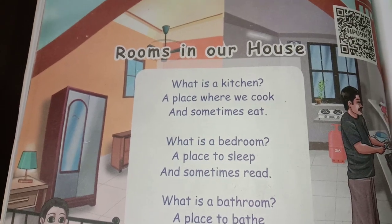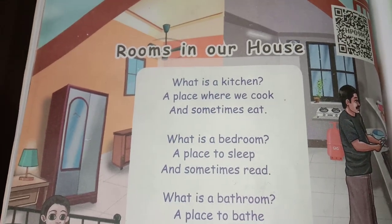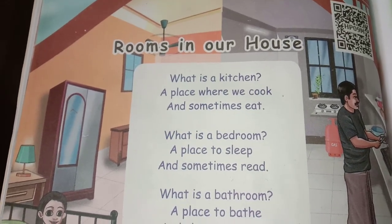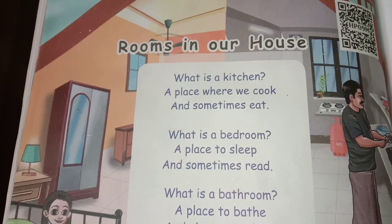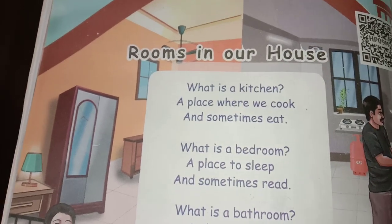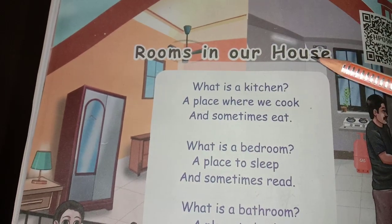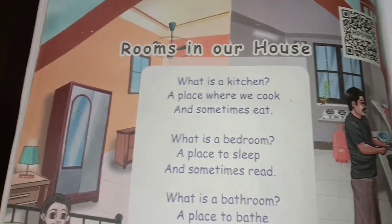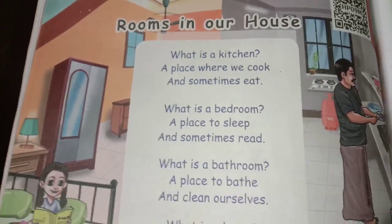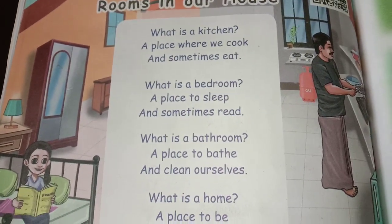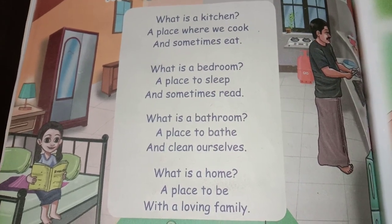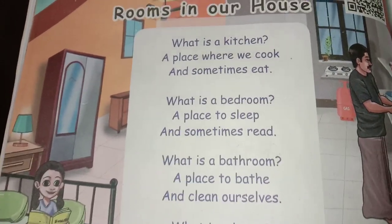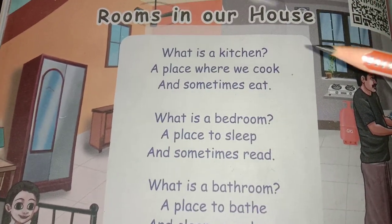Hello children, now we are going to see in Unit 1 — that is our kitchen — a poem part, about rooms in our house. See what other rooms will be there in our home. So they have given it in the form of a poem.